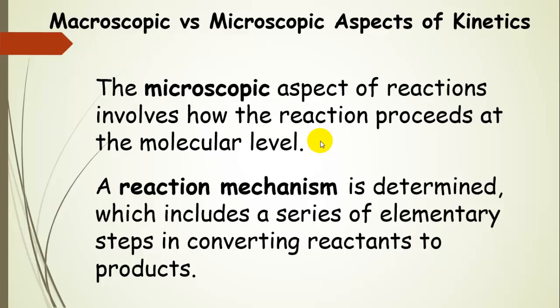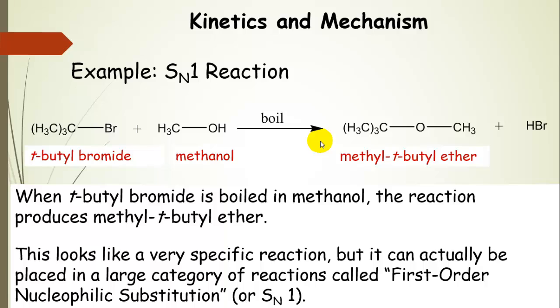Now, I'll show you an example right now. So here's an SN1 reaction and an example of one. Here's t-butyl bromide and we're going to react it with methanol. We're going to boil the reaction mixture, and in the end we're going to get methyl t-butyl ether and hydrogen bromide.